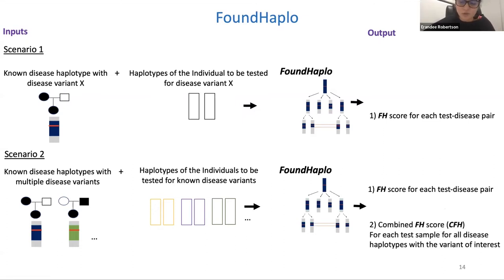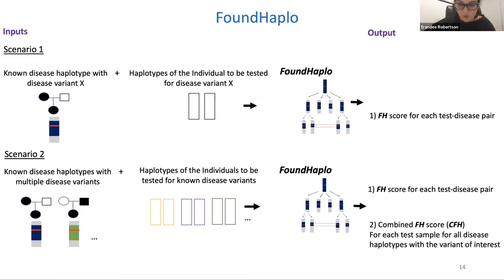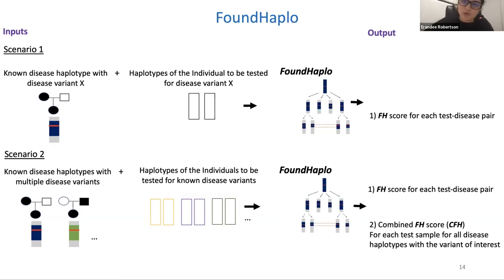The combined score is a work in progress, but we believe it gives more power by leveraging multiple disease haplotypes — the more disease haplotypes, the better, especially when disease variants are associated with multiple founder effects.